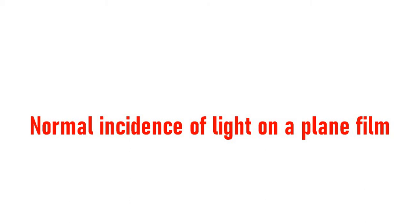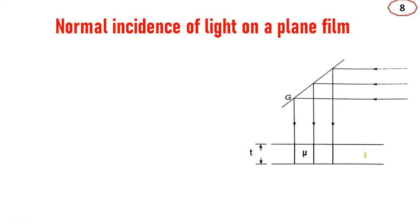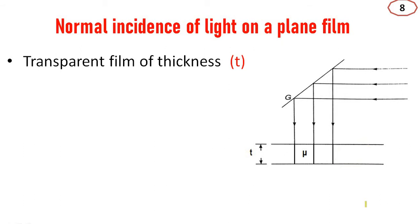Consider a transparent film of thickness t with a refractive index mu. This is the film — the upper surface and the lower surface of the film. Light is incident normally on the film.